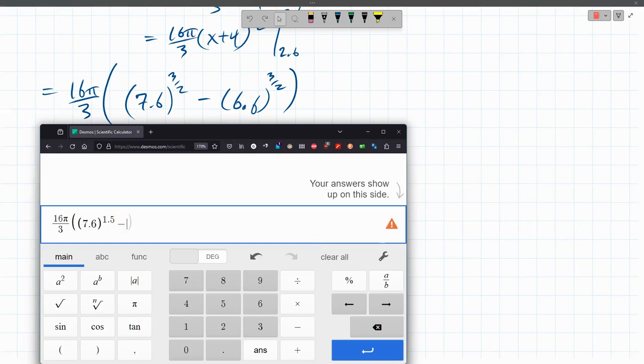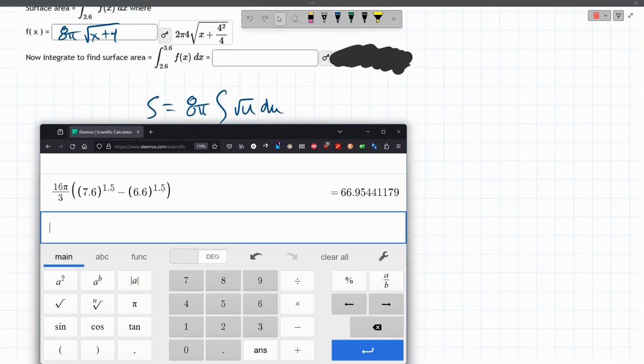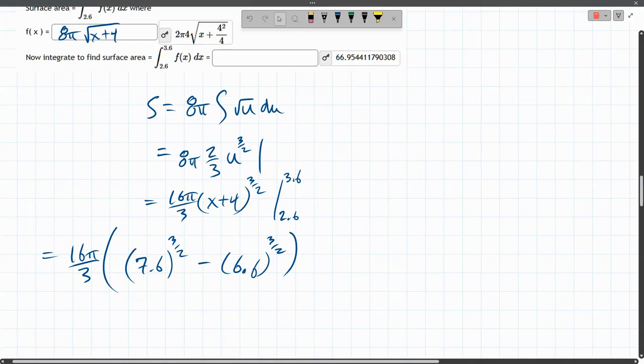Minus. 6.6. Raised to the 1.5. Close parentheses. Enter. 66.95 something something. And. There we go.